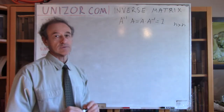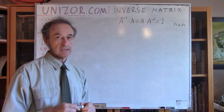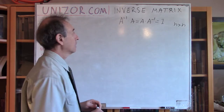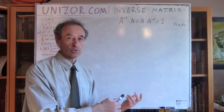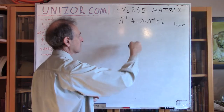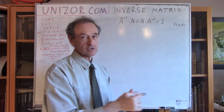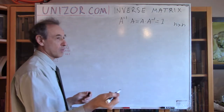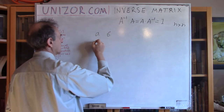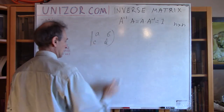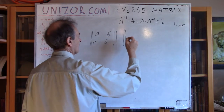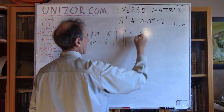A less trivial example: what if matrix A contains only one row or one column equal to zero? From the rules of matrix multiplication, if you have one particular row or column equal to zero, the result will also contain a row or column equal to zero. For example, take a matrix A, B, C, D and multiply it by X, Y, 0, 0.